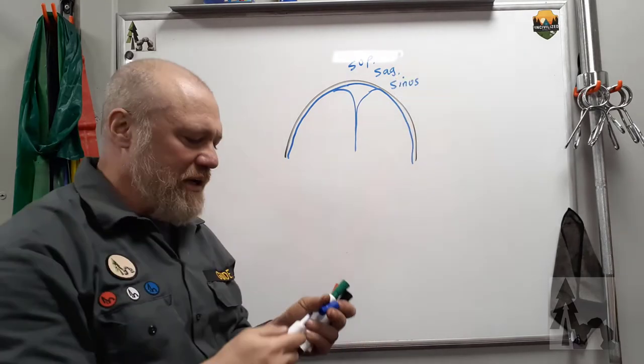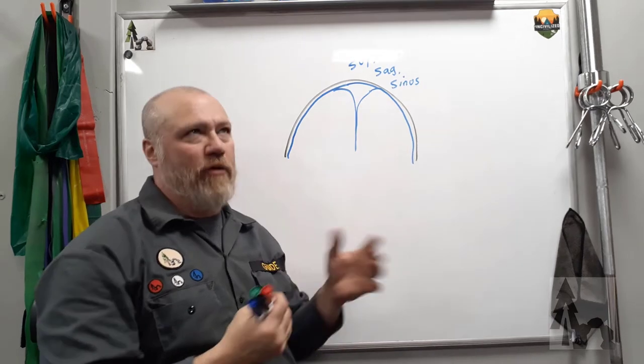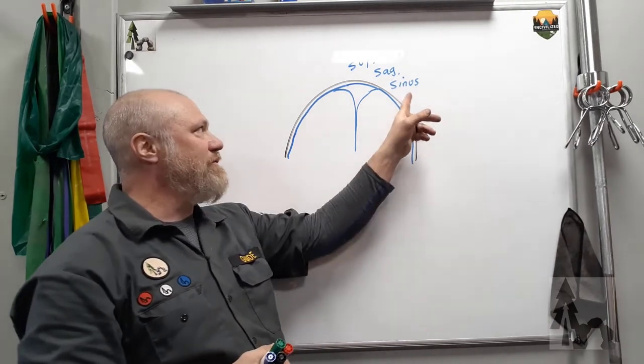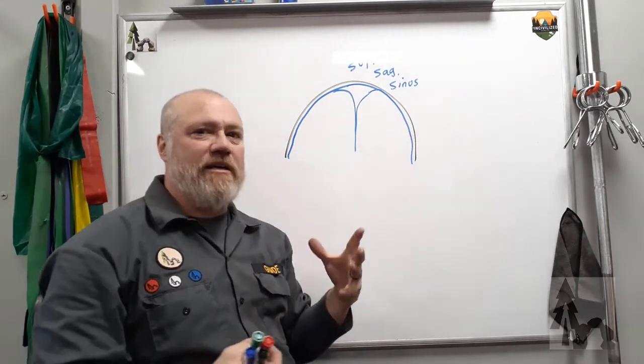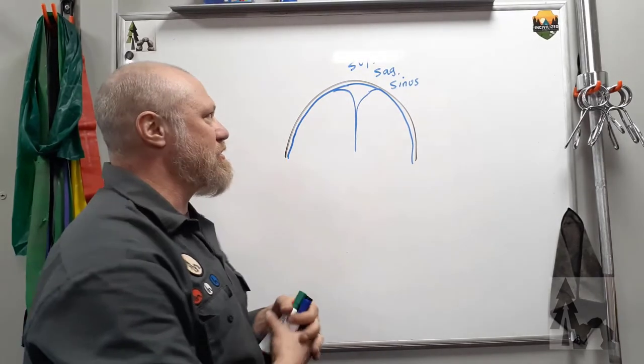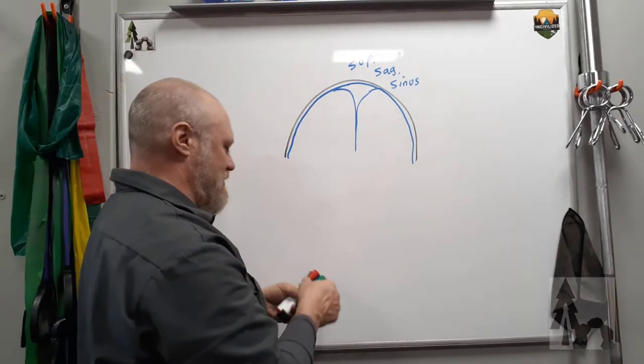So the sinus is going to be an opening in the layers of the dura, or formed by the layers of the dura, that are going to serve the function the same as a vein elsewhere in the body. It's going to be part of your venous drainage system. I'm going to show you where there are some different sinuses.